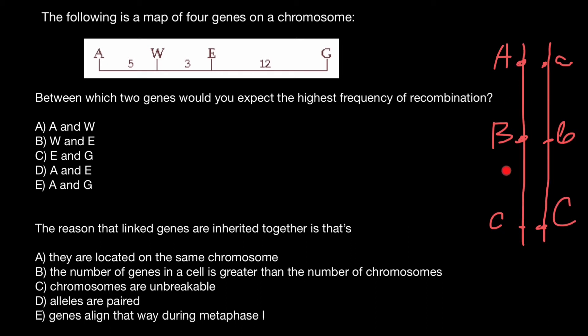The greater the distance between the genes, the higher chance that crossing over would happen between two genes. And according to this map, of course, the greatest distance would be between gene A and G.